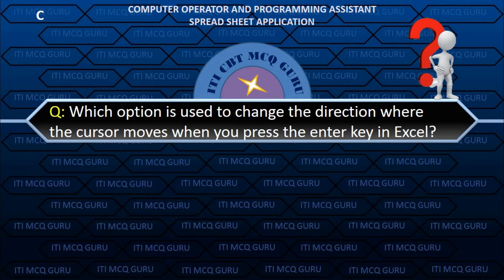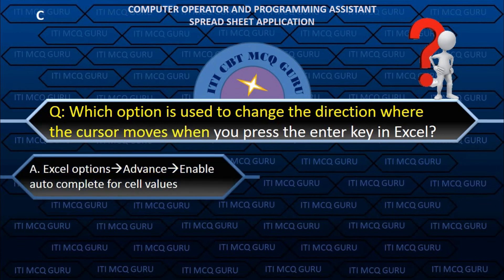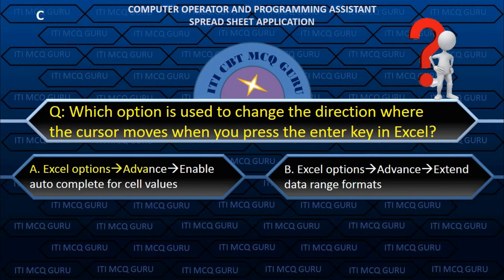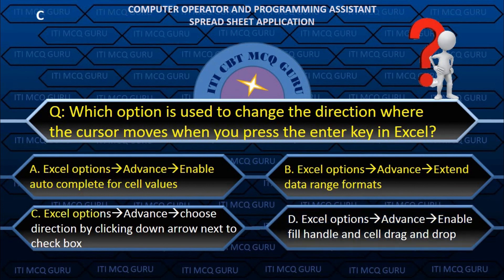Which option is used to change the direction where the cursor moves when you press the Enter key in Excel? C. Excel Options → Advanced → choose direction by clicking the direction of the cursor.